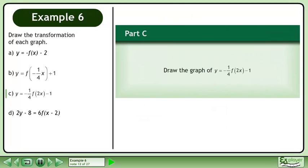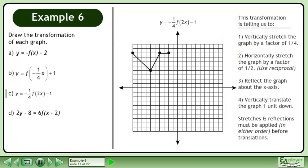In part c, we'll draw the graph of y equals negative 1 over 4 times f of 2x minus 1. This transformation is telling us to: 1. Vertically stretch the graph by a factor of 1 over 4, 2. Horizontally stretch the graph by a factor of 1 over 2, 3. Reflect the graph about the x-axis, and 4. Vertically translate the graph one unit down. Stretches and reflections must be applied in either order before translations.